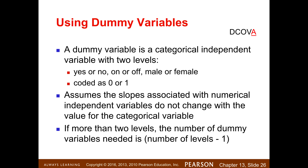The last thing we'll look at is dummy variables — it doesn't mean they're dumb; it's a name for a categorical predictor variable. A dummy variable is a categorical independent variable with two levels: true or false, male or female — male/female is probably the most commonly used dummy variable. We code them as zeros and ones. If there are more than two levels we'd need more than one dummy variable, but we don't get into that here. We're looking at the simplest case: a categorical predictor with just two levels.